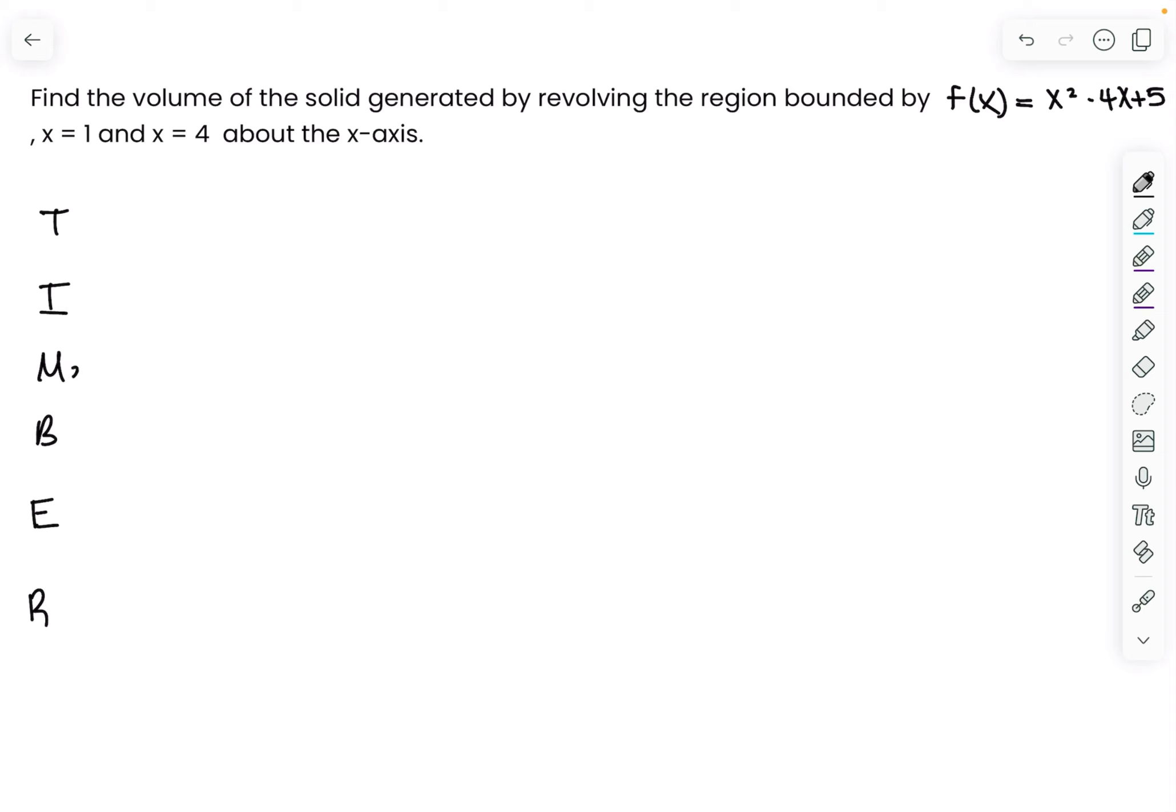The first thing I start with is the method. I write down the methods available: disk, washer, or shell. I'm only given one function of x, so I'm going to do disk. If it was two, then it could be washer or shell.